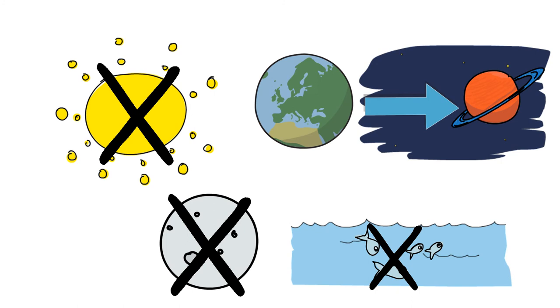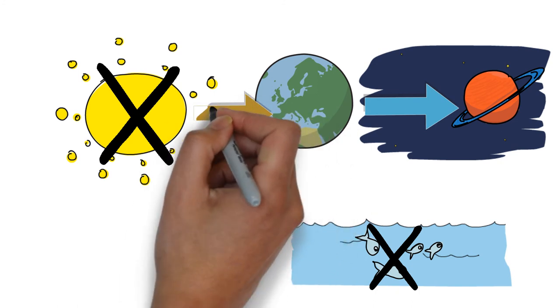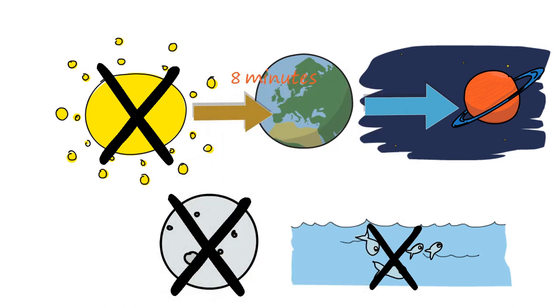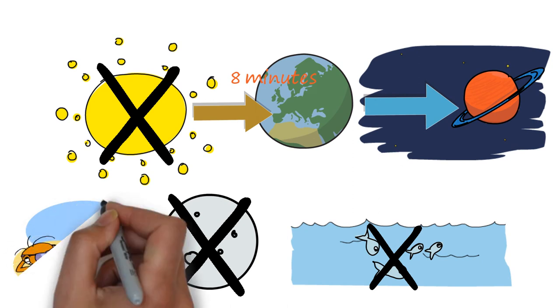Interestingly, we wouldn't know if the sun disappeared for about 8 minutes after it had. This is because the light from the sun takes about 8 minutes to get to earth. At least that gives you 8 minutes to get that last tan.